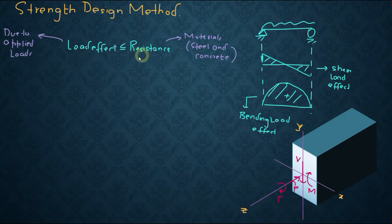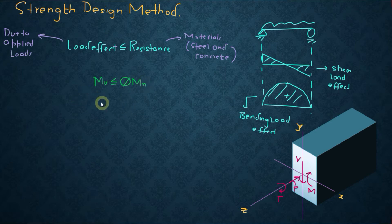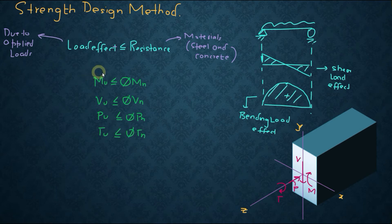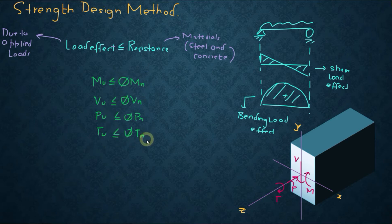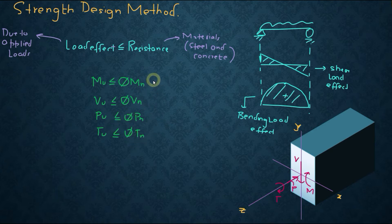Writing the basic design relationship in terms of flexure: Mu is less than or equal to Phi times Mn. Similarly, we have equations for shear, axial, and torsional load effects. On the left-hand side are the different load effects — bending, shear, axial, and torsional — and on the right-hand side is the resistance provided by the cross-section. If all of these equations are satisfied, the section has adequate strength and is safe strength-wise.